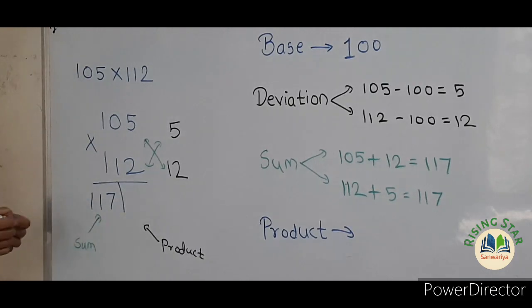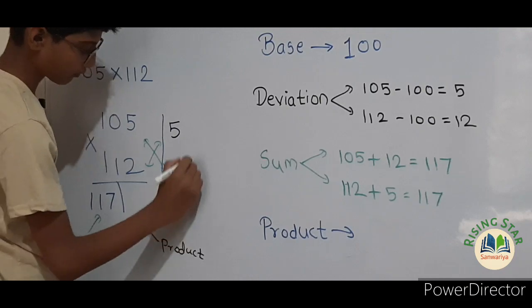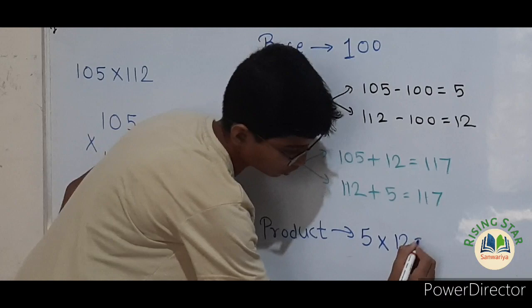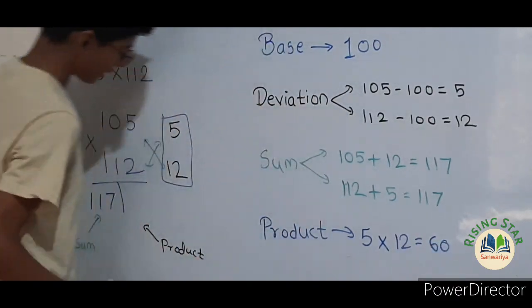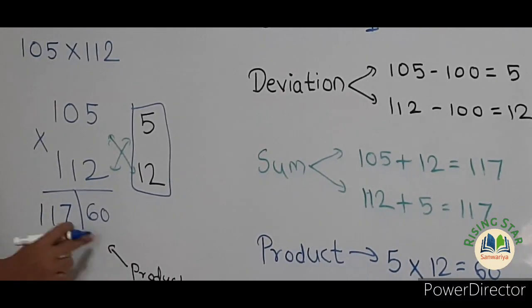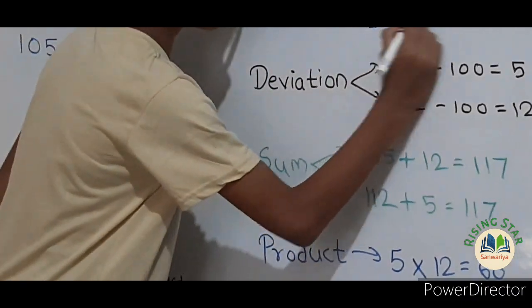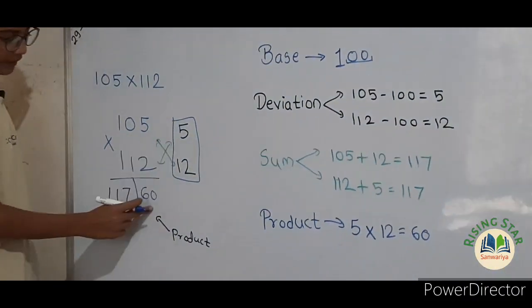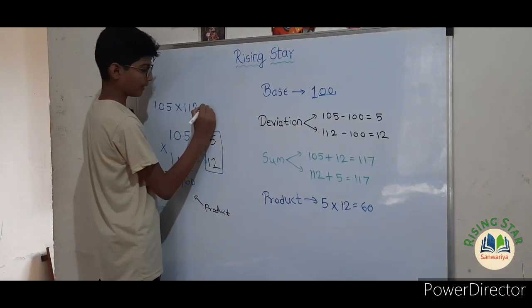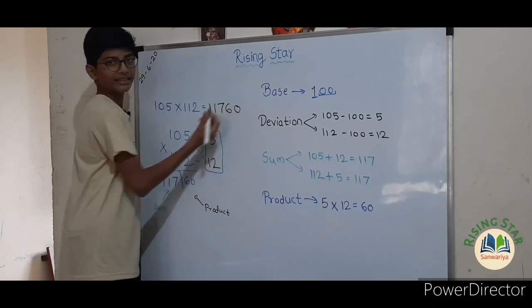Now here should be the product, so we have to multiply the deviations. Five into twelve equals sixty. Remember, the number of digits on the product side should equal the number of zeros in the base — here there are two zeros, so there should be two digits. That's correct. Therefore, one hundred and five into one hundred and twelve equals eleven thousand seven hundred and sixteen.